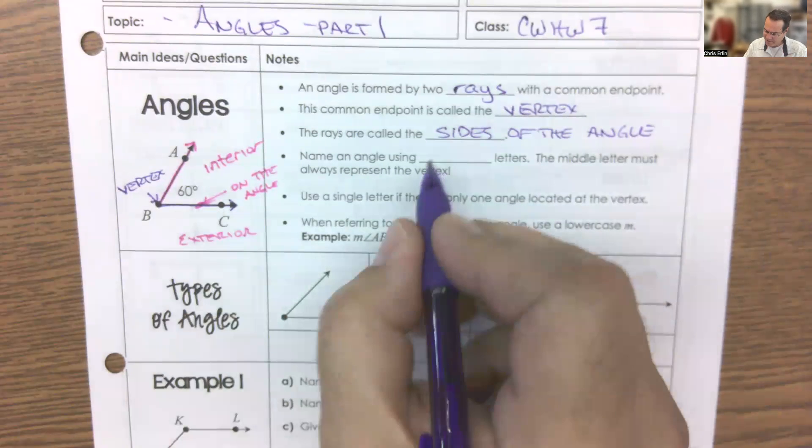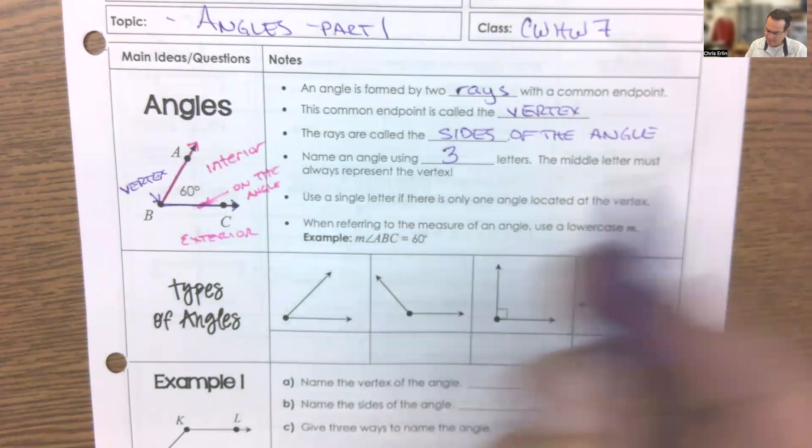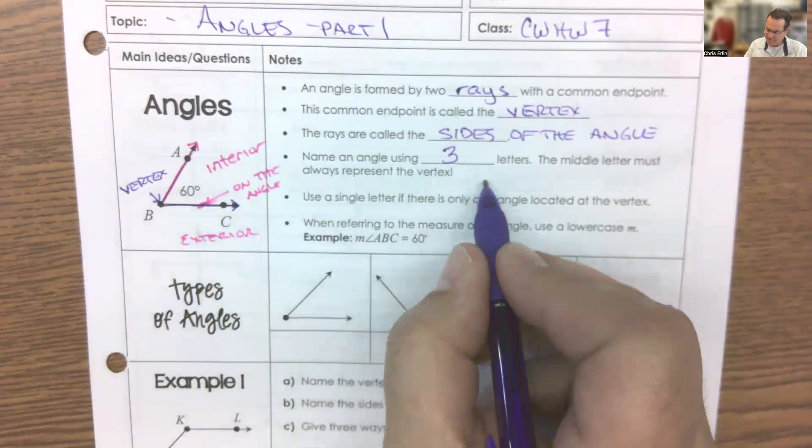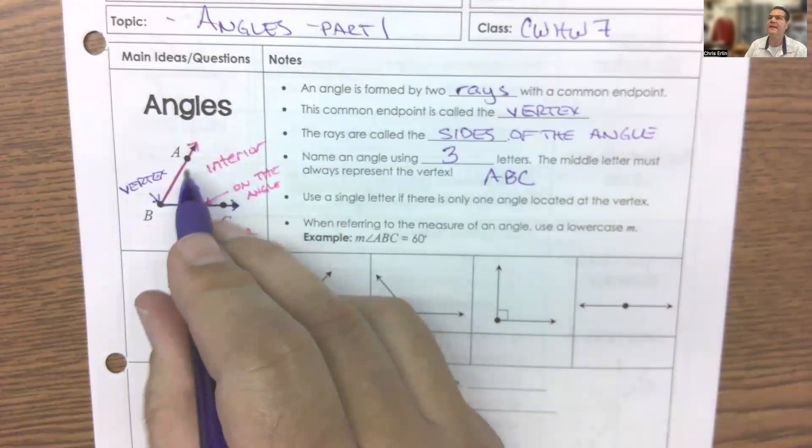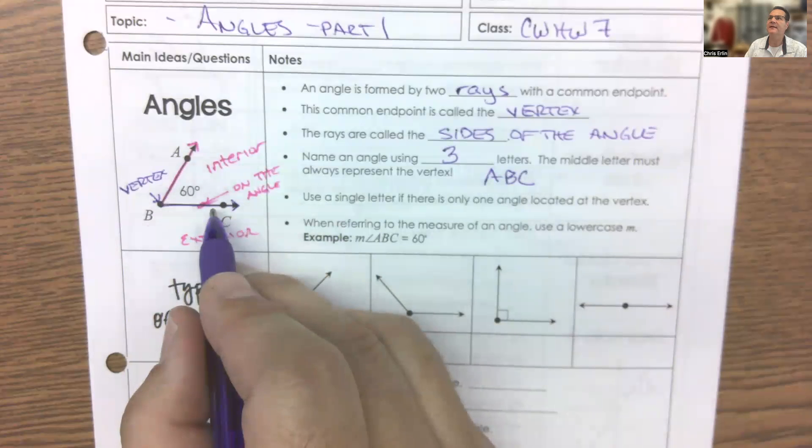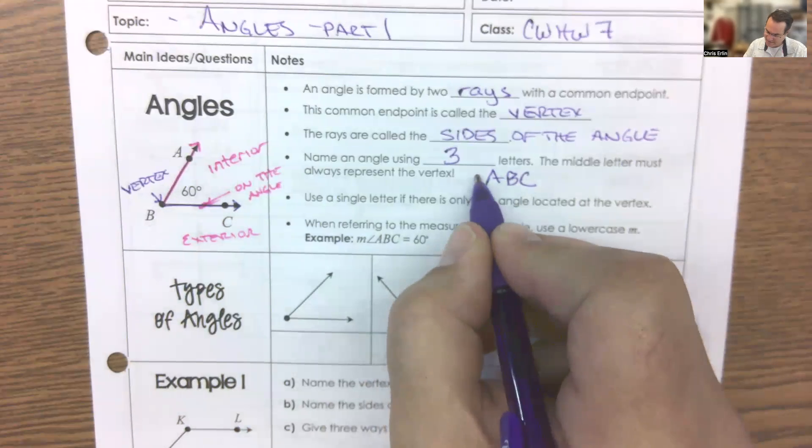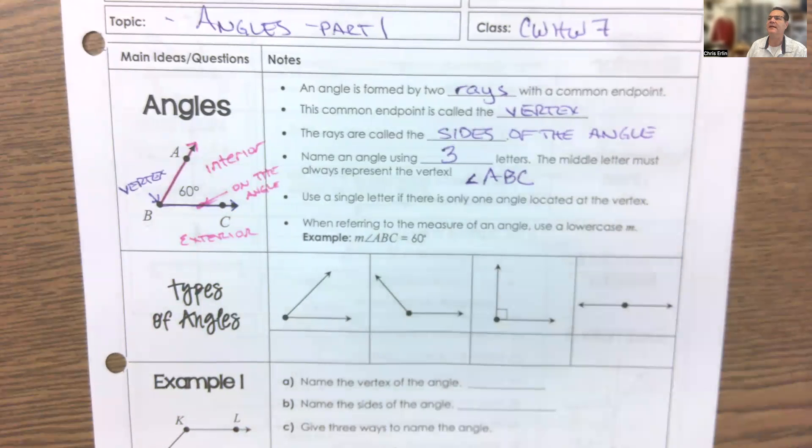When we name an angle, we'd ideally like to name it using three letters. The middle letter must always be the vertex. So for instance, if I were to say A, then B, then C, B is the middle one, and that's the vertex. So that seems right. But I'm going to clarify, just like we did with lines and points and segments and rays, that this is an angle we're talking about. So in front of it, I put the little less than symbol. Looks like a little angle. And I'm talking about angle ABC.